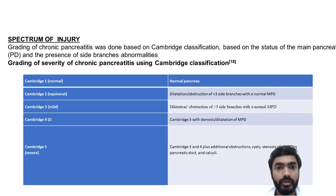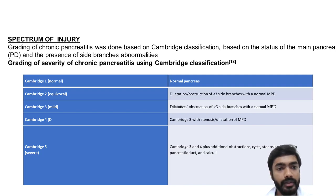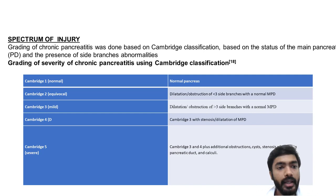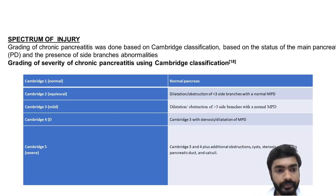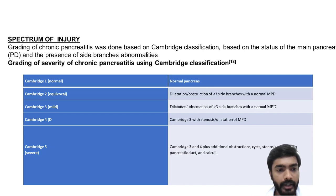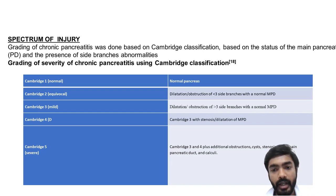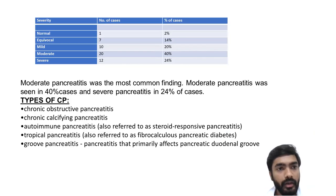Grading for chronic pancreatitis was done based on the Cambridge classification, based on the status of the main pancreatic duct and presence of side branch abnormalities. Cambridge 1 is normal; Cambridge 2 is equivocal — dilatation or obstruction of fewer than three side branches with a normal main pancreatic duct; Cambridge 3 (mild) — dilatation and obstruction of more than three side branches with a normal main pancreatic duct; Cambridge 4 (moderate) — Cambridge 3 plus stenosis and dilatation of the main pancreatic duct; Cambridge 5 (severe) — Cambridge 3 and 4 plus additional obstructions, stenosis of the main pancreatic duct, and calculi. In our case series: 1 normal, 7 equivocal, 10 mild, 20 moderate, and 12 severe. Moderate pancreatitis was the most common finding at 40% of cases, and severe pancreatitis in 24% of cases.